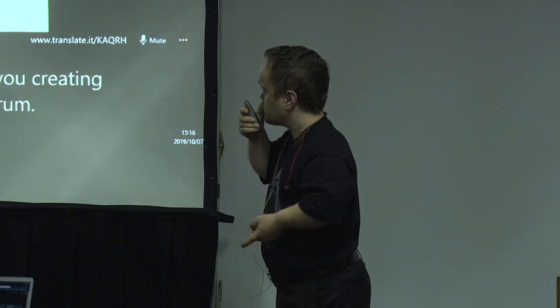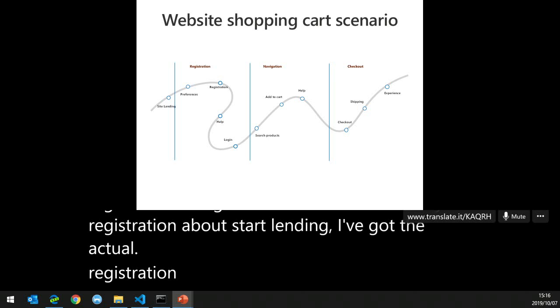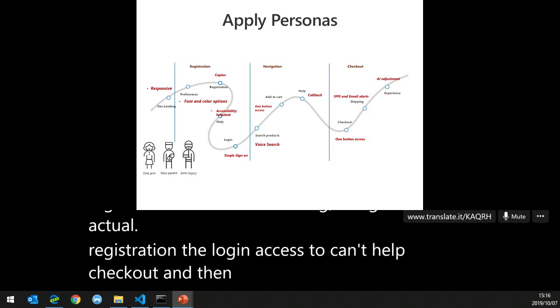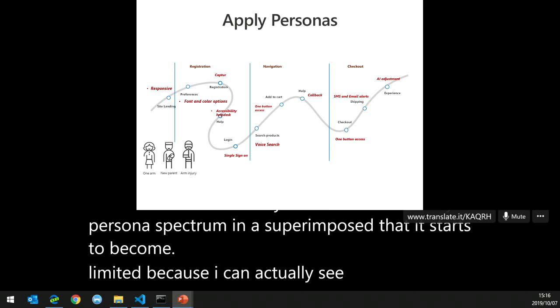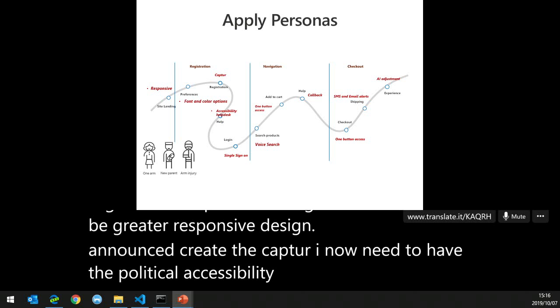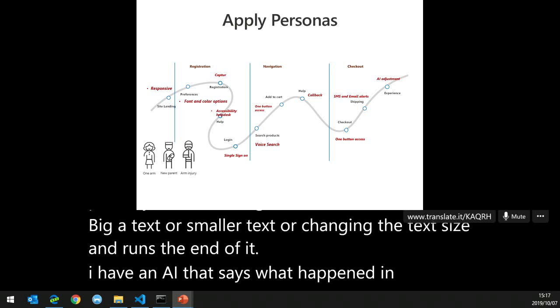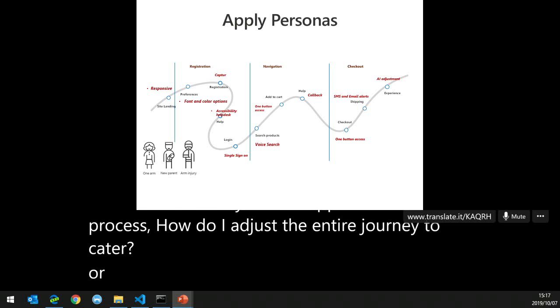Here's a shopping cart example. I've got registration, navigation, and checkout. In registration: start, landing, registration, login, access to cart, help, checkout, and review. If I superimpose my persona spectrum it becomes innovative — I can see my entire process changes. I need responsive design, a CAPTCHA, an accessibility help desk, text sizing options. And at the end, an AI that asks: what happened in that process? How do I adjust the entire journey to cater for more accessibility? That's the final bit — learn from diversity, learn from what people feed back.